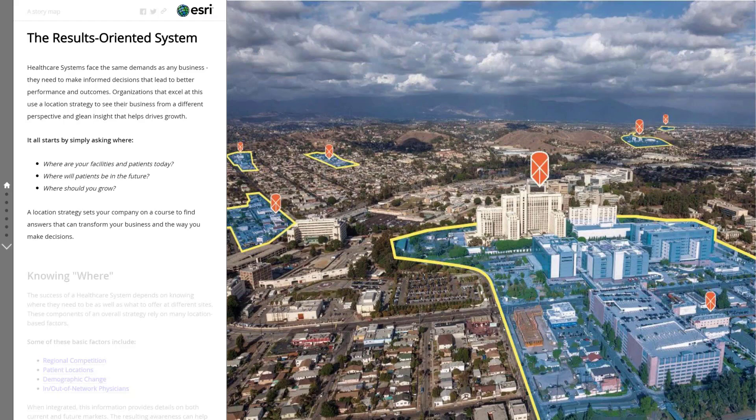As you're planning your smart growth strategy, you'll want to predict where your patients will be in the future. That will depend on understanding demographic trends and population shifts, as well as changes in the health status of your patients and the population at large. Combining the current state of your facilities and patients with a predicted future state of the population will give you a perspective about the market outlook in different areas, and that information directly supports your opportunity to grow and fill service gaps. With a location strategy, your organization can find answers to questions that will transform your business and the way that you make decisions.